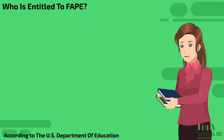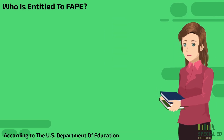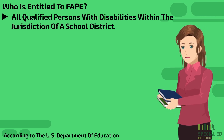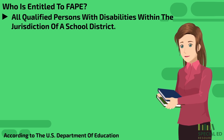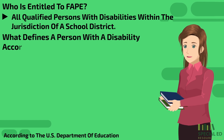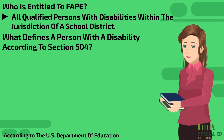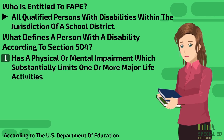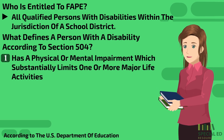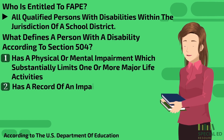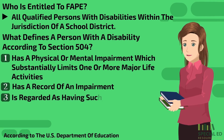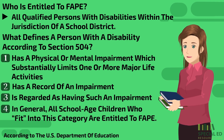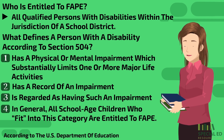So who is entitled to FAPE? Well, according to the U.S. Department of Education, it's all qualified persons with disabilities within the jurisdiction of a school district. What defines a person with a disability? According to Section 504: they have a physical or mental impairment which substantially limits one or more major life activities; number two, has a record of impairment; number three, is regarded as having such an impairment. In general, all school-age children who fit into that category are entitled to FAPE.